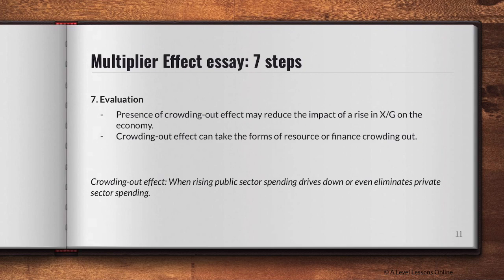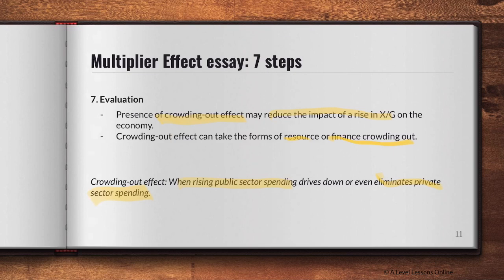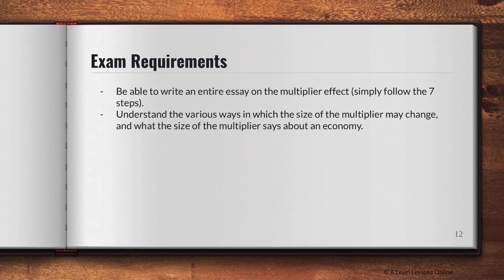Step seven is evaluation. The presence of the crowding-out effect may occur and reduce the impact of a rise in exports or government spending. The crowding-out effect is when rising public sector spending drives down or eliminates private sector spending — when there's an increase in G or X, investment I may drop instead, meaning overall AD may not increase at all. For example, if the government invests in equipment for firms, those firms may not increase their own investment and may even reduce it.